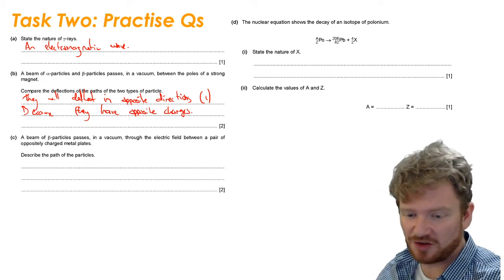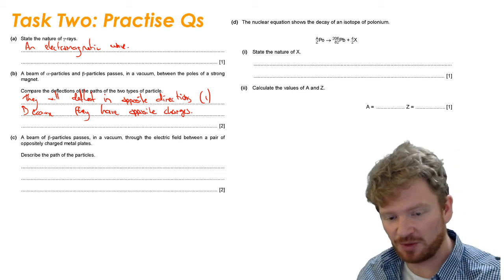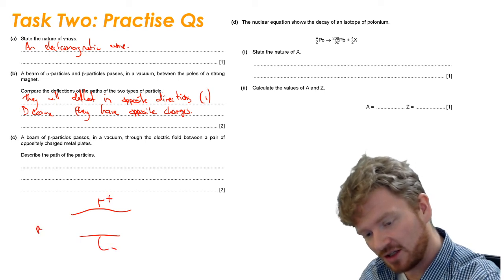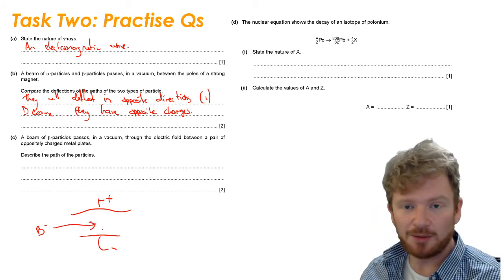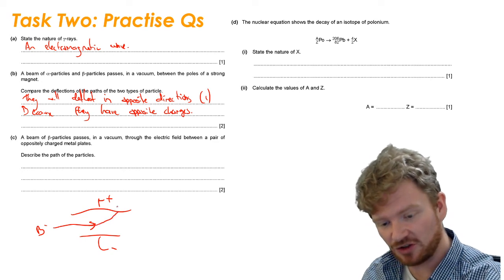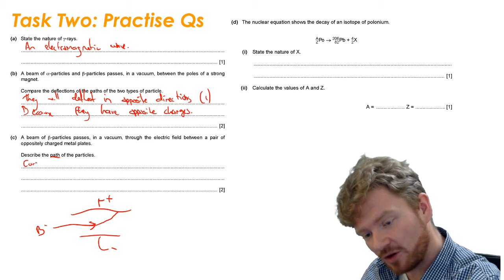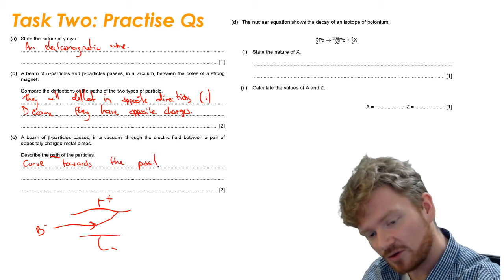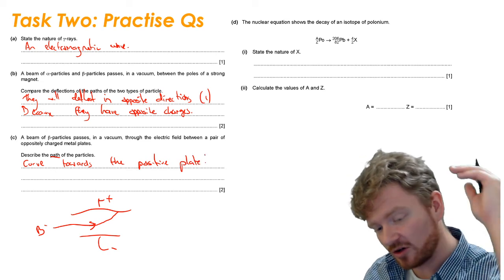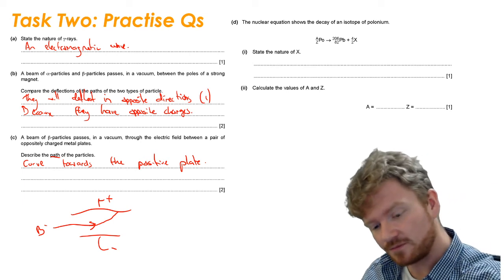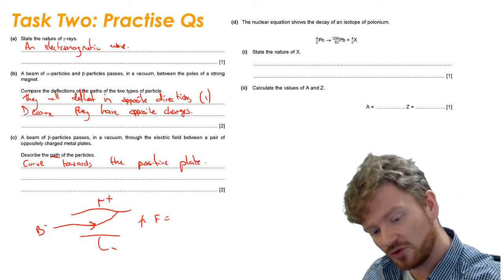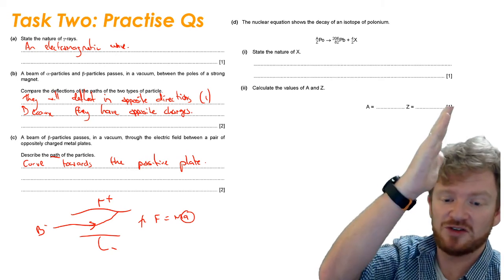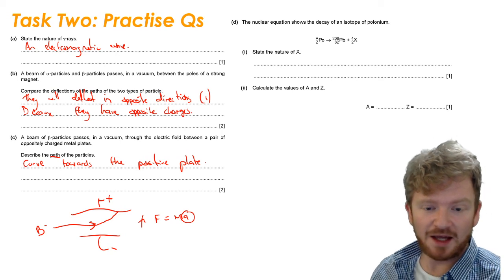Now if a beam of beta particles passes in a vacuum through an electric field between a pair of oppositely charged plates, this one would be plus, this one would be minus. Here's my beta minus particles. Beta particles are negatively charged, so they're going to be attracted to the positively charged plates. Describing the path, the path is going to curve for one mark towards the positive plate for a second mark. Why is it going to curve? If we think about the acceleration of it, we can say force equals mass times acceleration. There's going to be a constant force on it, so it's going to accelerate towards the other plate. So that means the path is going to curve as it gets faster and faster heading towards it.